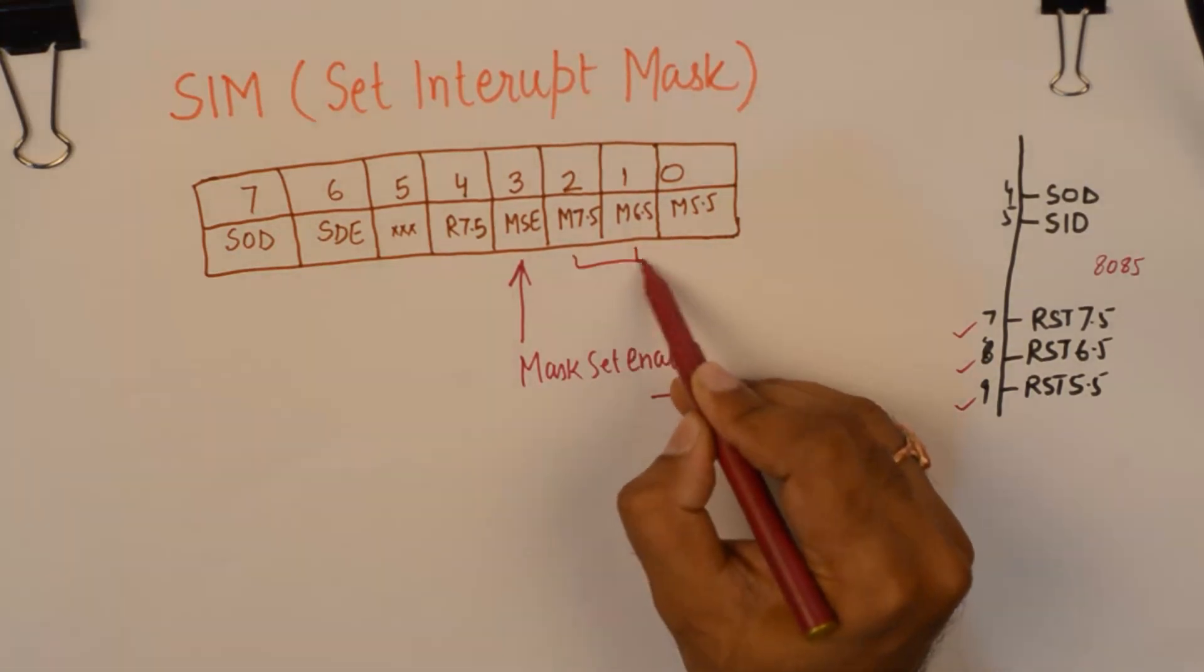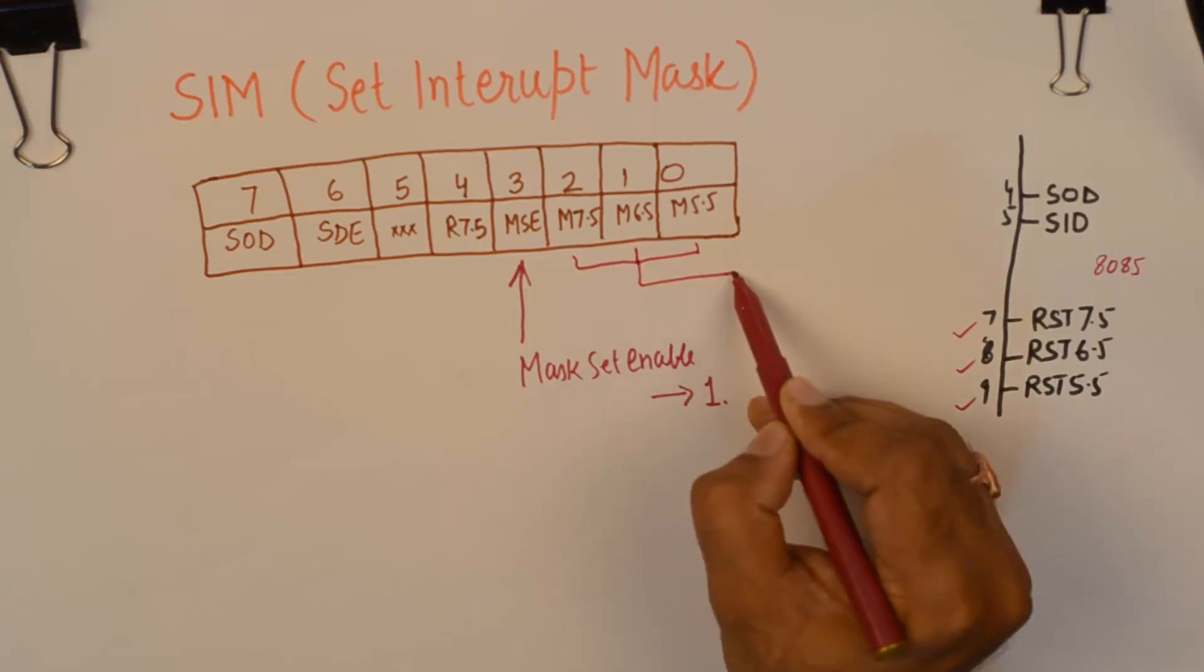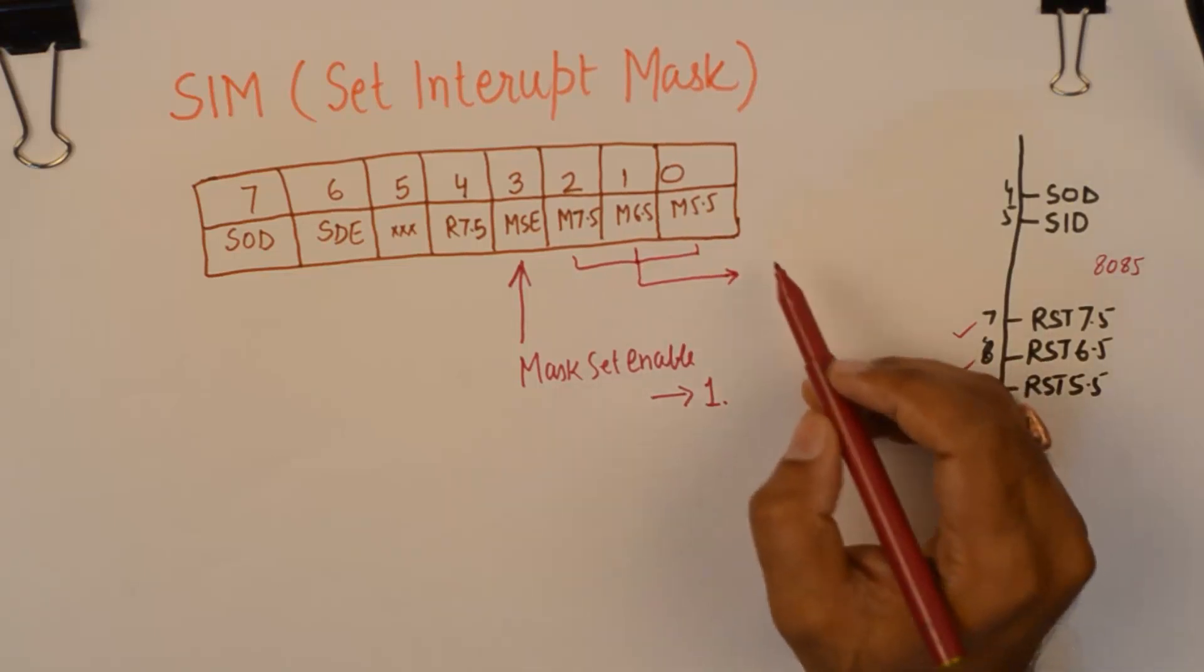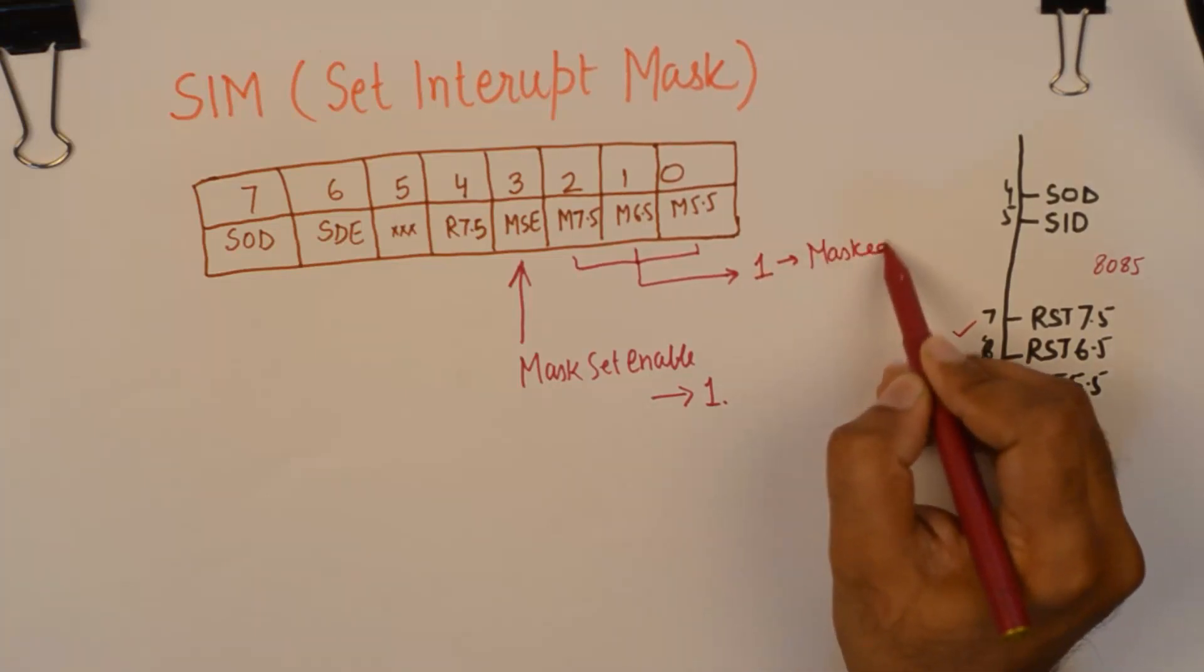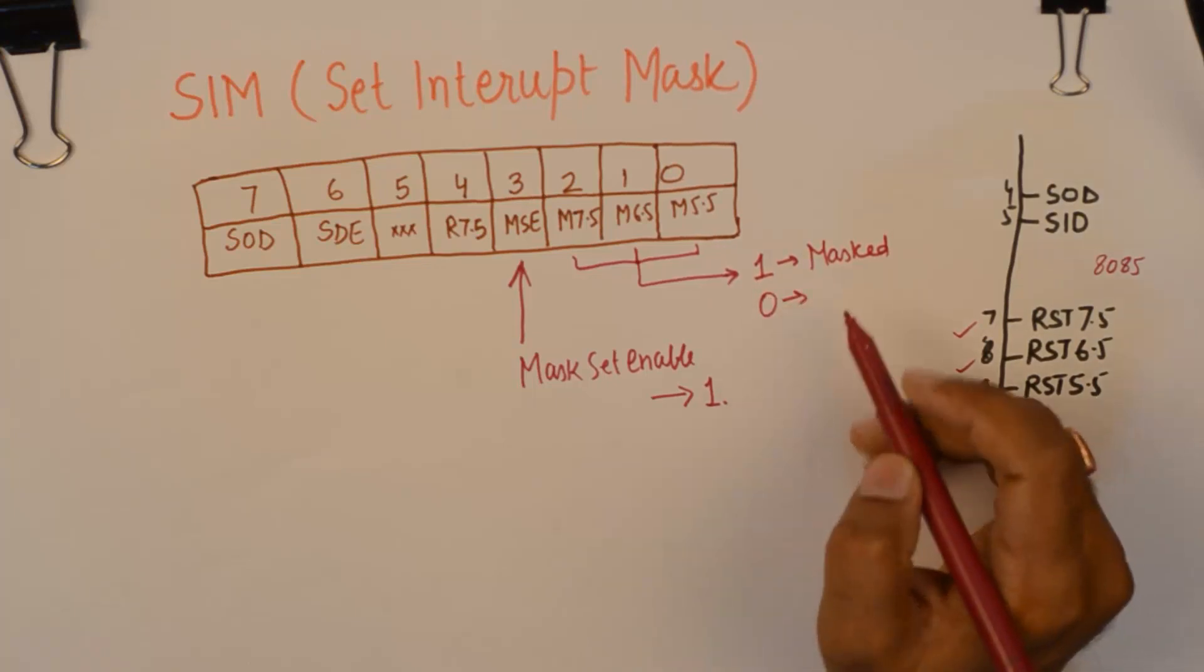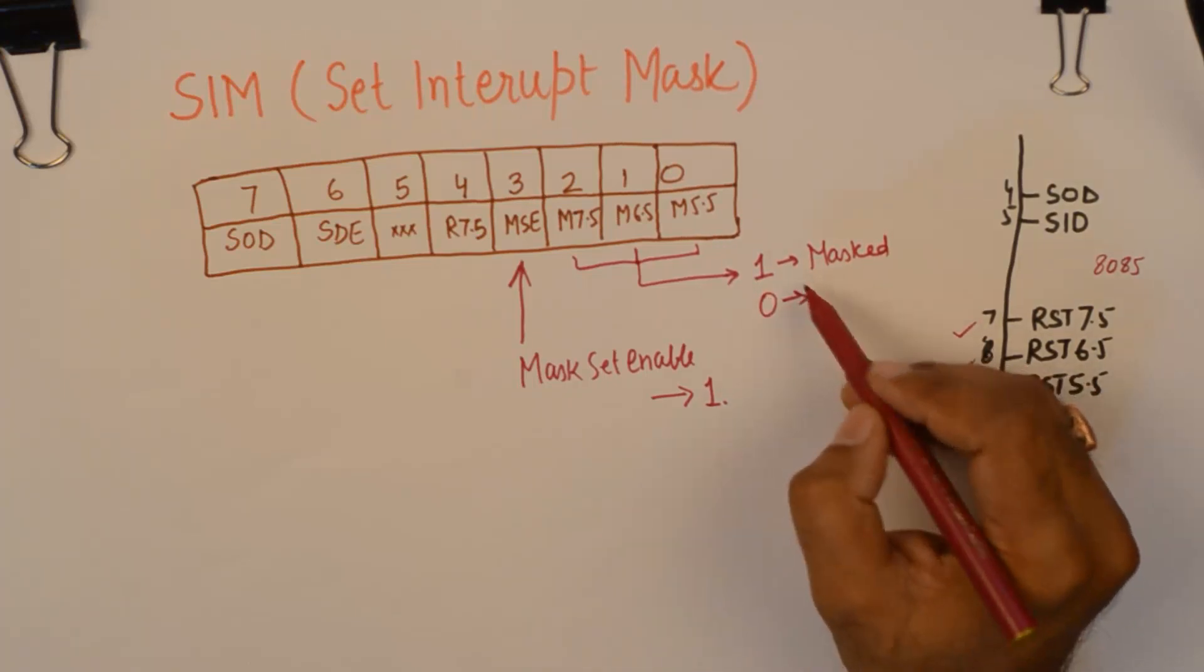These three interrupts can be masked. If you make these bits as 1, they will be masked and if you keep it 0, they will be available.